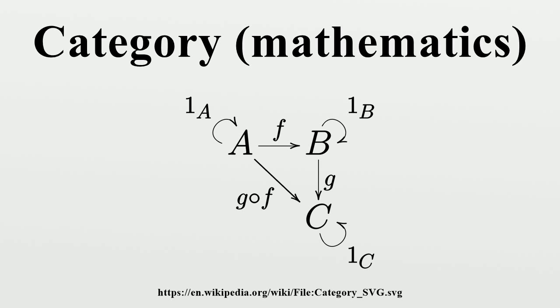Definition: There are many equivalent definitions of a category. One commonly used definition is as follows. A category C consists of a class ob of objects, a class hom of morphisms, or arrows, or maps, between the objects. Each morphism f has a unique source object a and target object b where a and b are in ob. We write f: a to b,